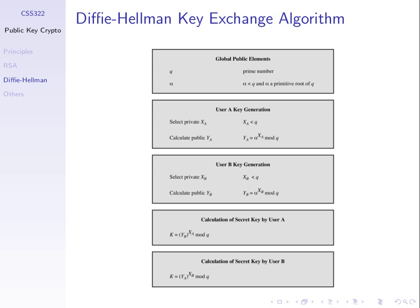Here's the algorithm — there are some public global elements: two numbers. Globally public means everyone knows them. Q is a prime number, and alpha is a number less than Q and a primitive root of Q. We've spoken about primitive roots when we looked at number theory. So I choose Q, find alpha as a primitive root mod Q, and tell everyone — these two values are public.